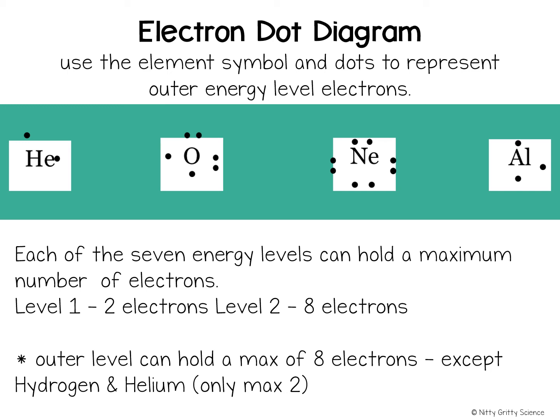Each dot represents how many electrons are in its outer energy level. Remember, outer energy levels can hold a maximum of eight electrons, with the exception of hydrogen and helium that can only hold two electrons.